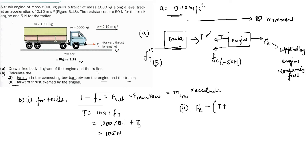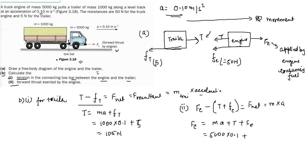The net force equals mass times acceleration of the engine. So Fe = ma + T + f_engine. Substituting: Fe = (5000 × 0.1) + 105 + 50.